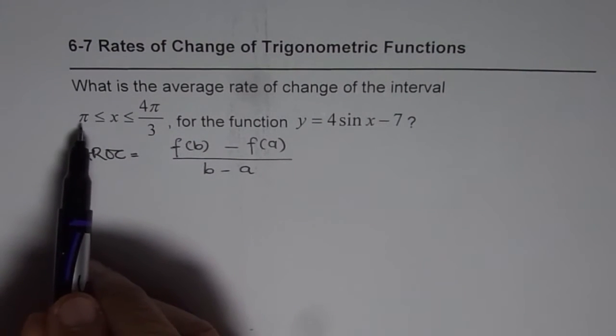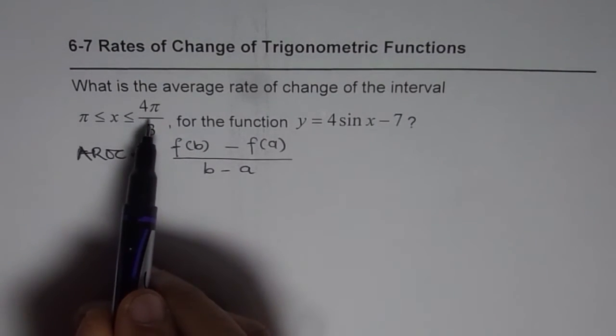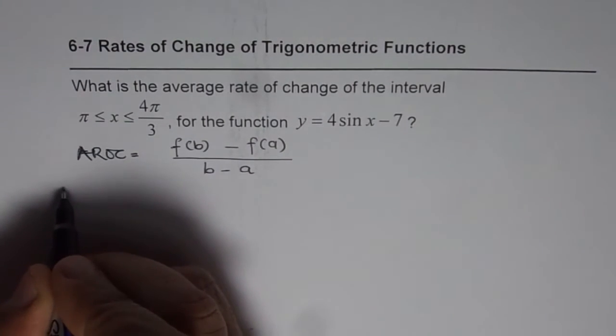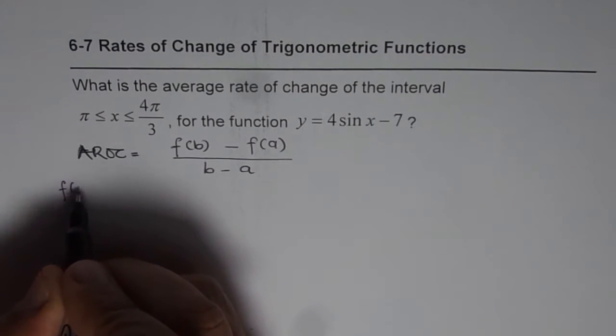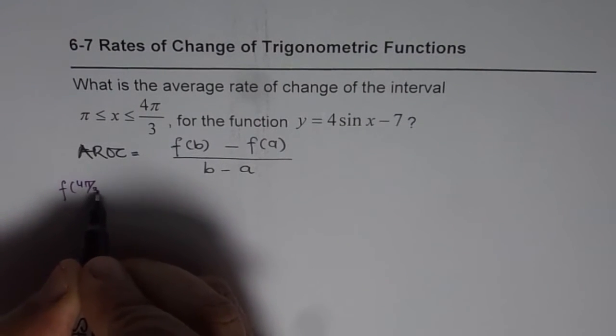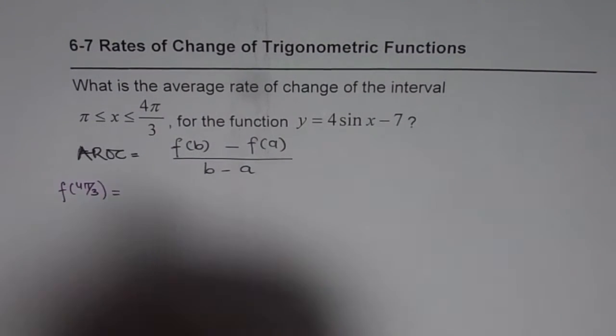Normally a is your lower limit and b is the higher limit. So we can find what is the value of the function at 4π/3 by substituting 4π/3 here.